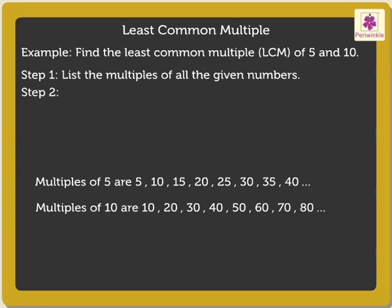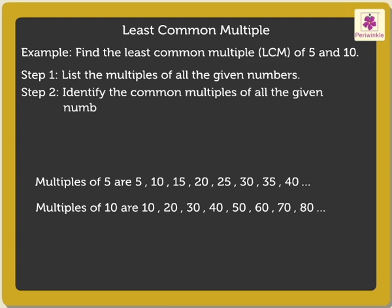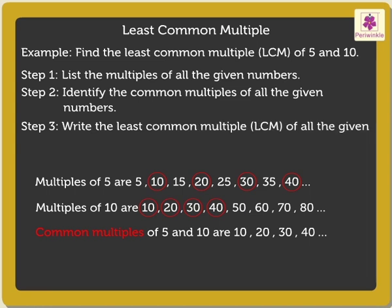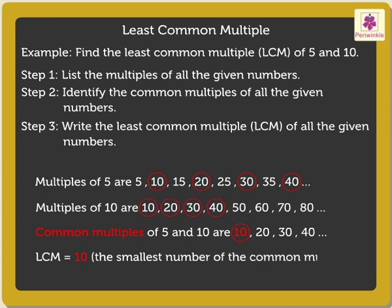Step 2: Identify the common multiples of all the given numbers. The common multiples of 5 and 10 are 10, 20, 30, 40 and so on. Step 3: Write the least common multiple. Here, the least common multiple is 10. Thus, LCM is 10, which is the smallest number of the common multiples.